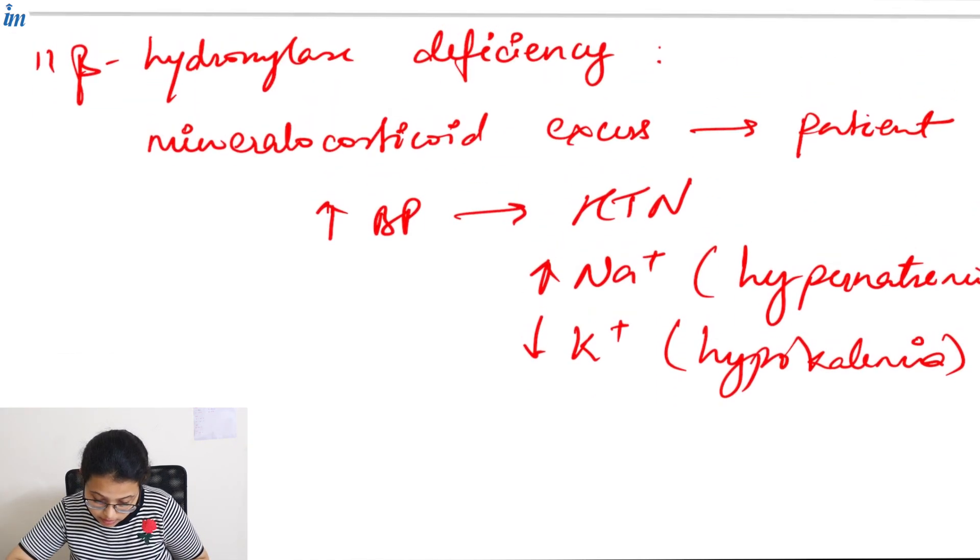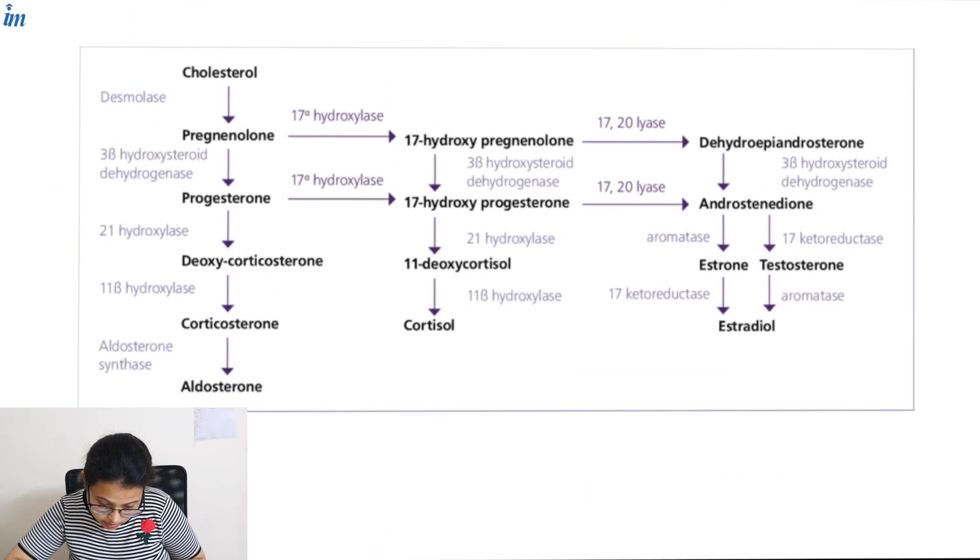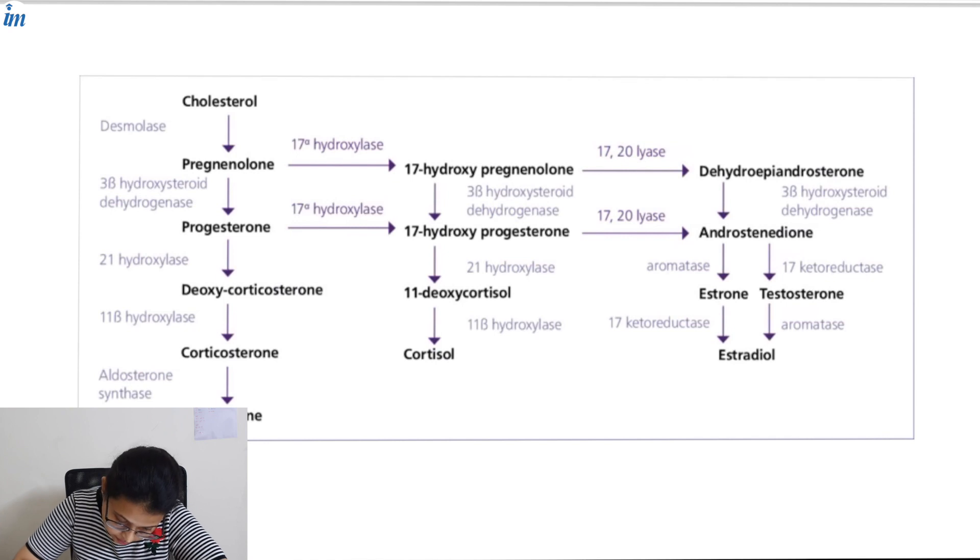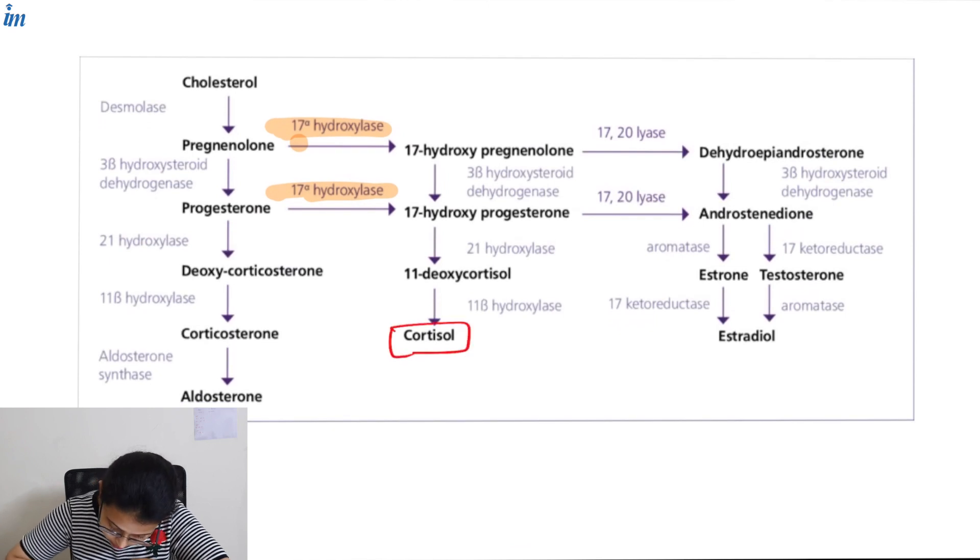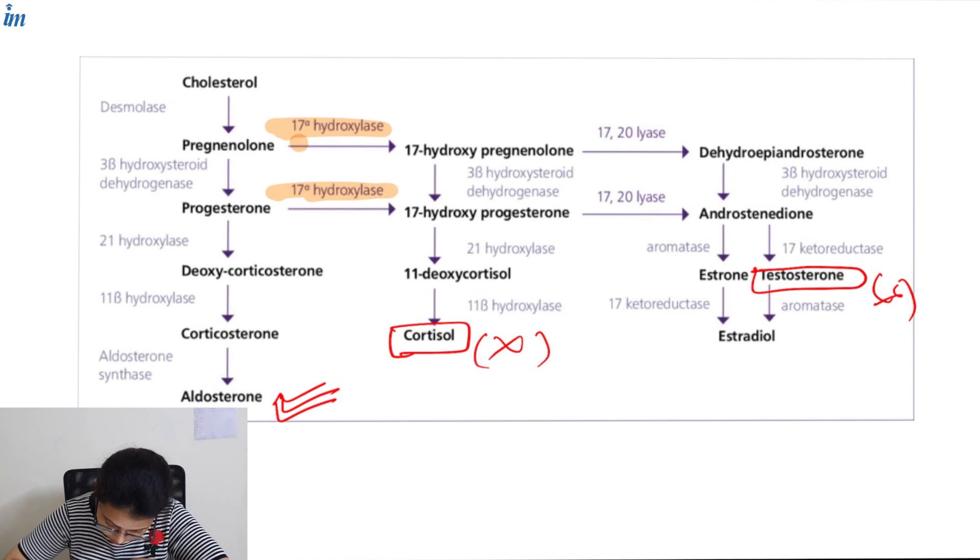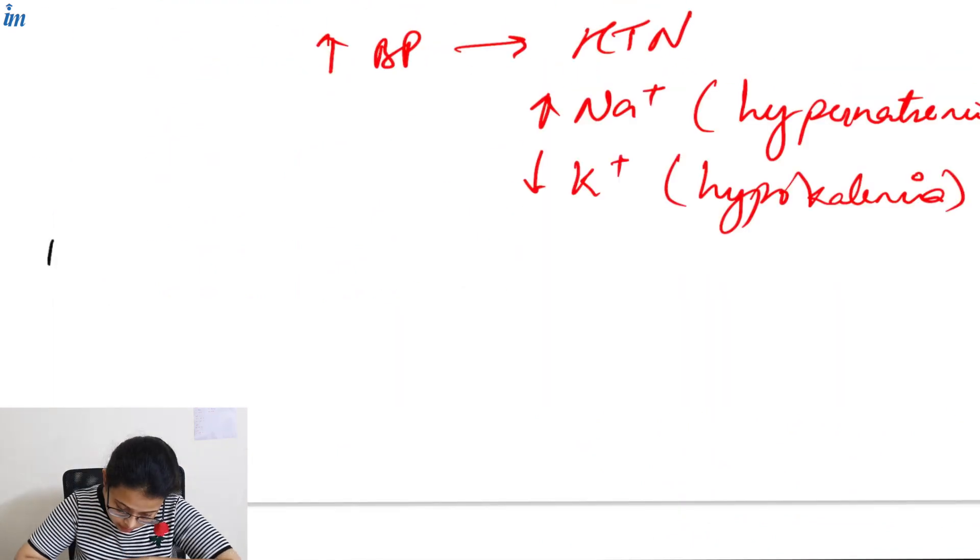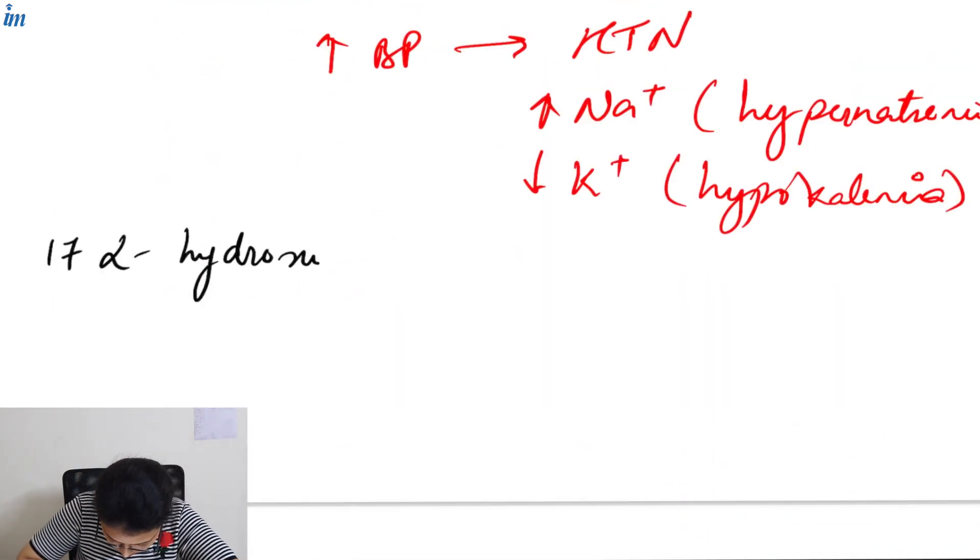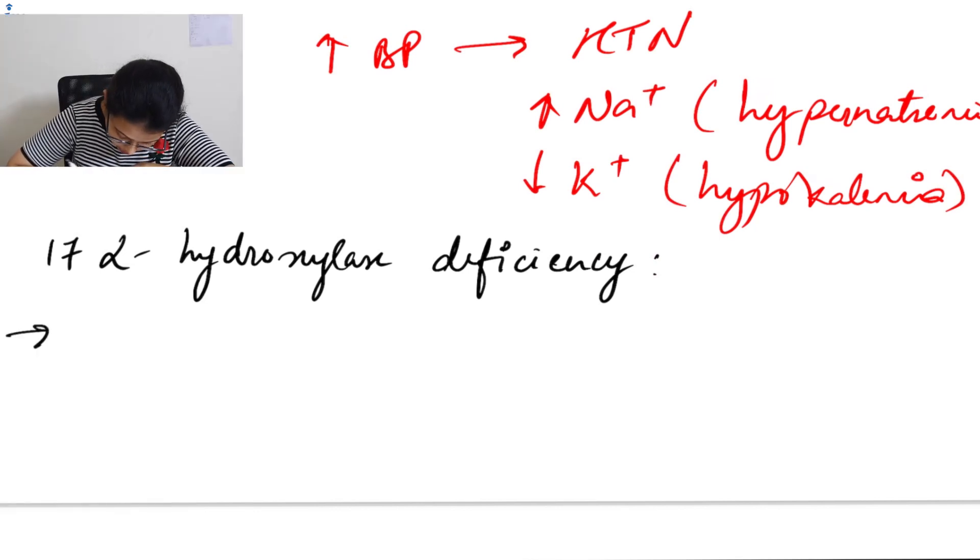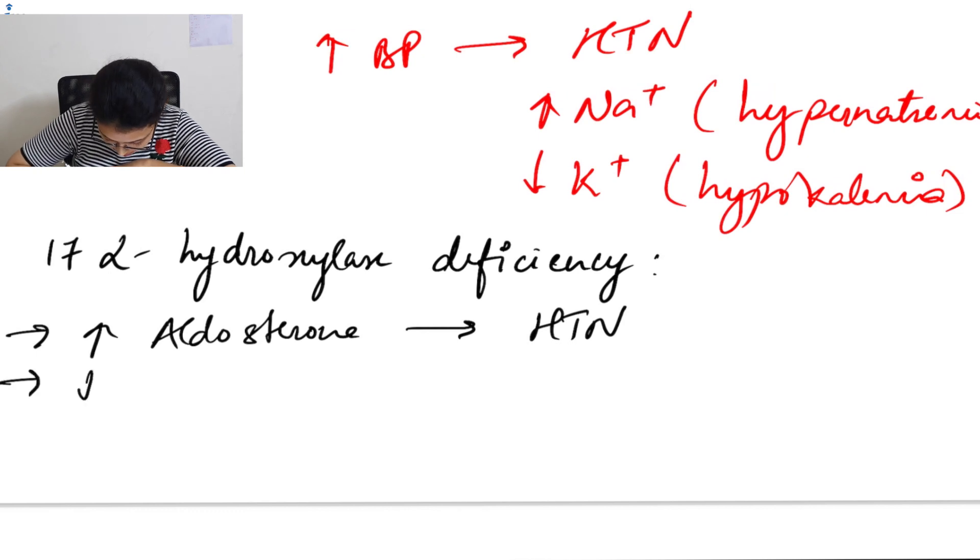The next enzyme deficiency is 17-alpha-hydroxylase. When this enzyme is deficient, cortisol and testosterone both are not produced, but aldosterone is continuously produced. Therefore, this enzyme deficiency is clinically manifested in patients with excess levels of aldosterone. The patient will suffer from hypotension, decreased level of cortisol causes hypoglycemia.